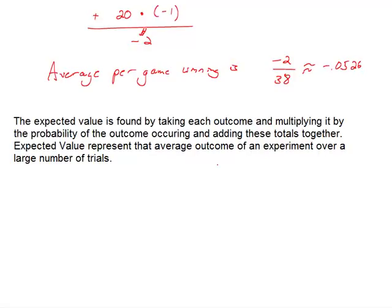The expected value is found by taking each outcome in an experiment and multiplying it by the probability of that outcome, then adding these totals together. It represents the average outcome of an experiment over a large number of trials.